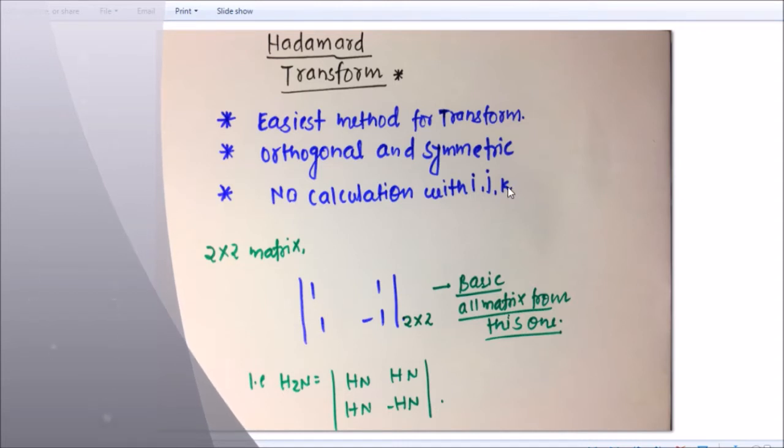So Hadamard made a basic matrix, a basic all-order form for this one. He gave one basic matrix 2 into 2. This is 1, 1, 1 and minus 1. Or I can say HN, HN, HN and minus HN.